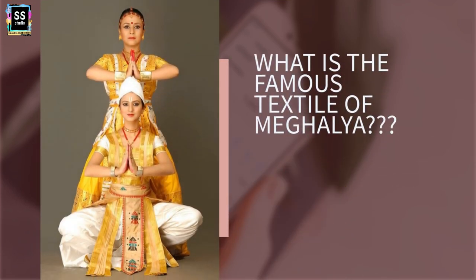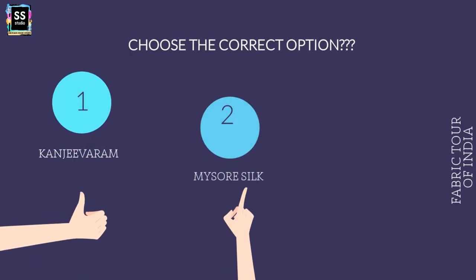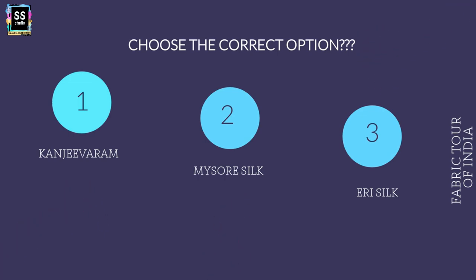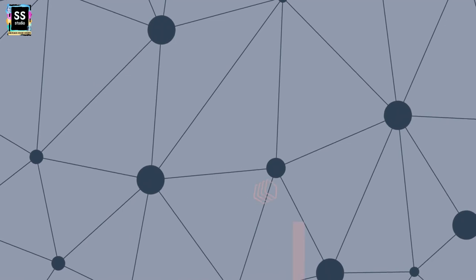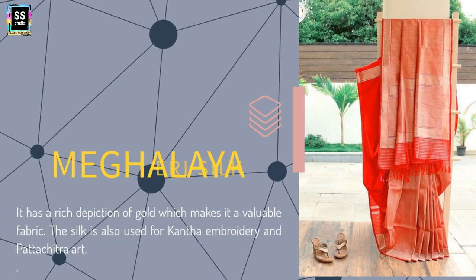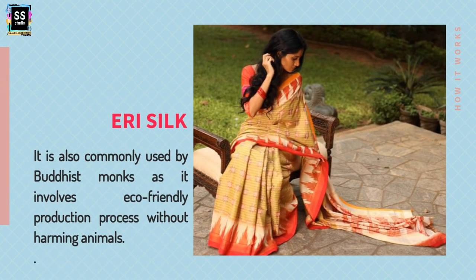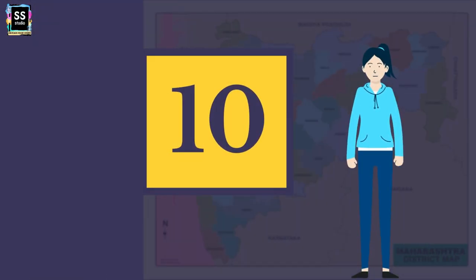State 9: Which is the famous textile of Meghalaya? The options are: Is it Kanjivaram? Is it Mysore Silk? Or is it Eri Silk? It is definitely Eri Silk. Eri Silk features depictions of gold, making it a valuable fabric. It is also used with Kantha embroidery and patchwork. It is commonly used by Buddhist monks as it involves eco-friendly practices that do not harm animals.